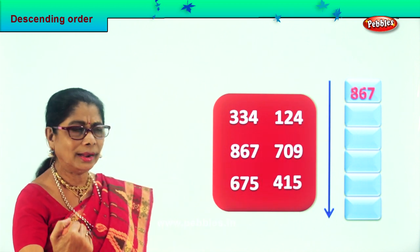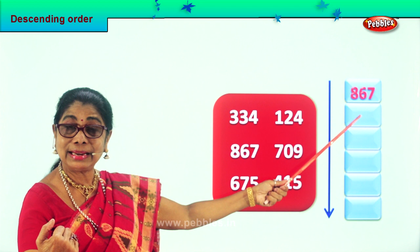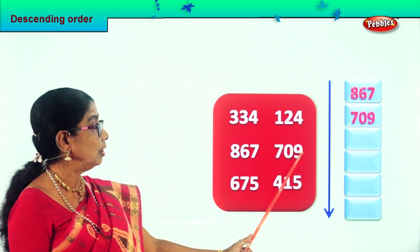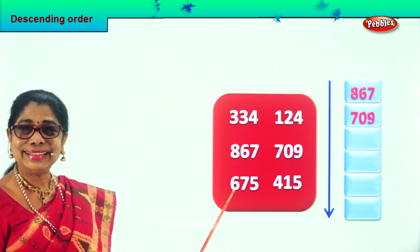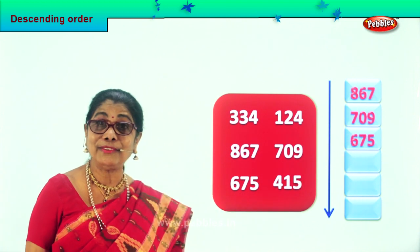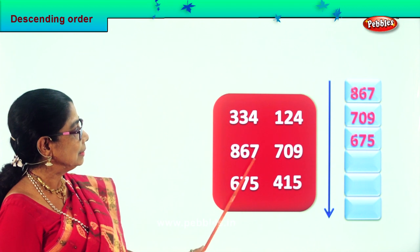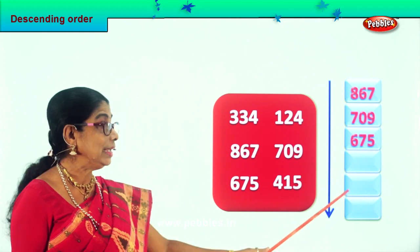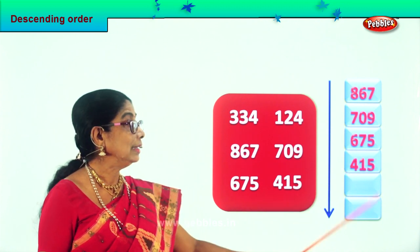Now we are going to look at one hundred less. Seven hundred nine — seven hundred is less than eight hundred, so we put this number down here. Seven hundred nine. Two numbers are gone. We are left with four numbers. Six hundred seventy-five — six hundred is less than seven hundred, so six hundred and seventy-five goes over there. Now we have three left. We do not have five hundred, but we do have four hundred fifteen, which goes after six hundred seventy-five.